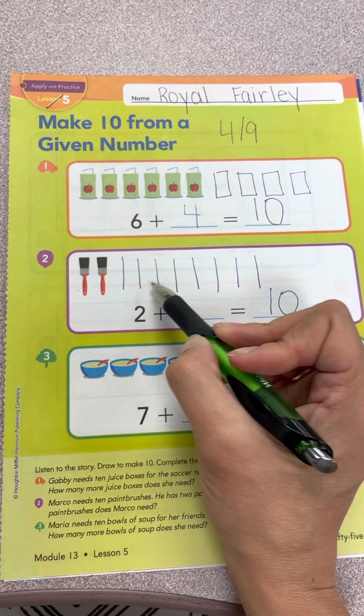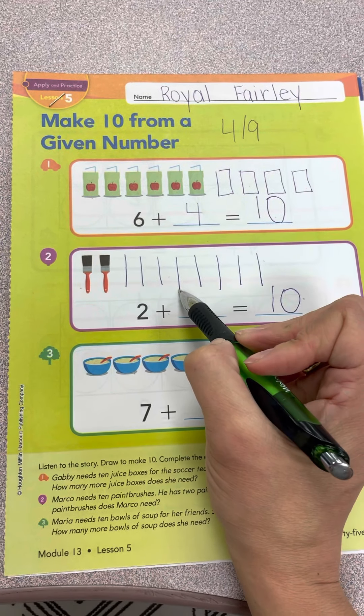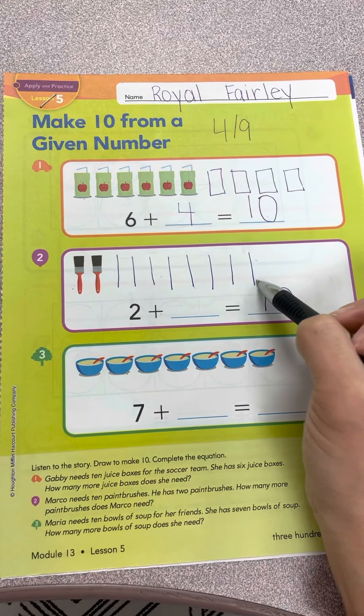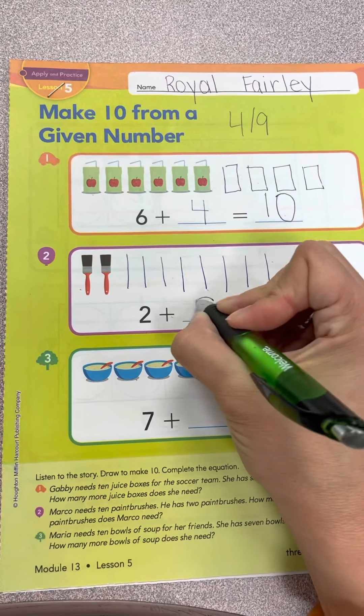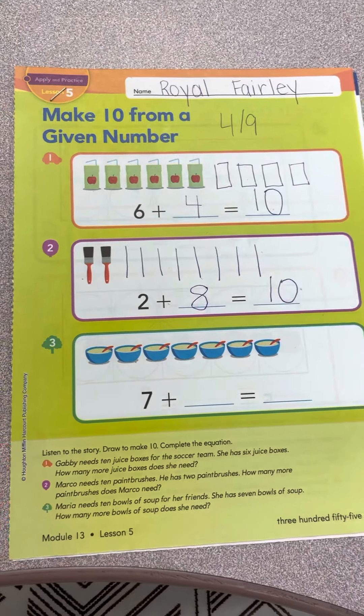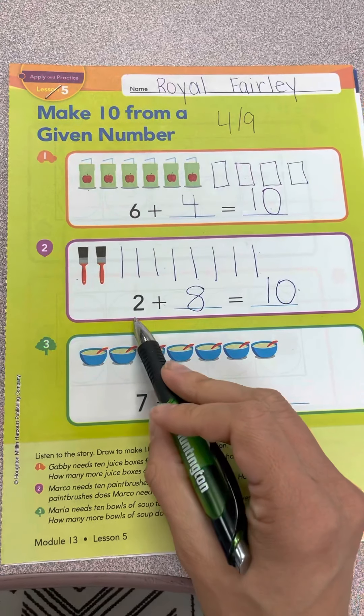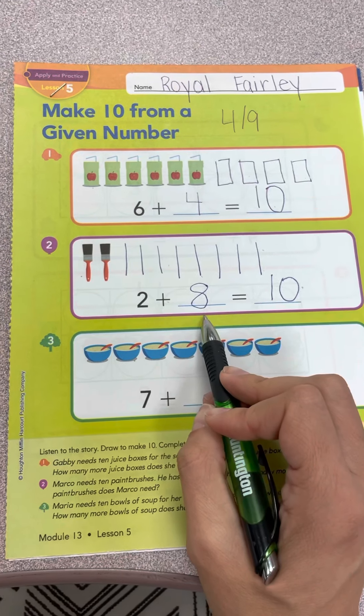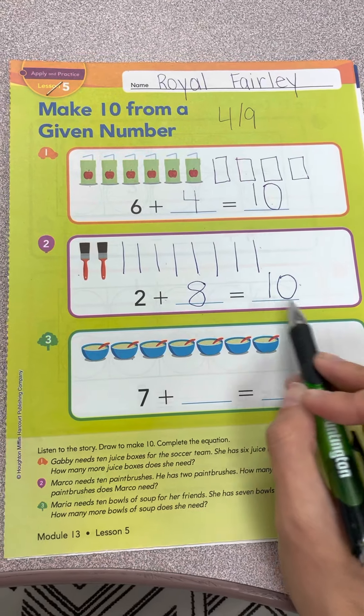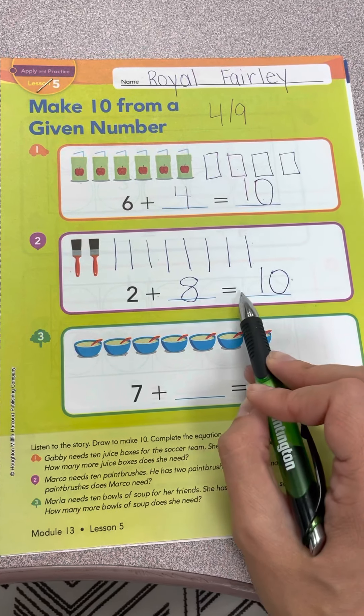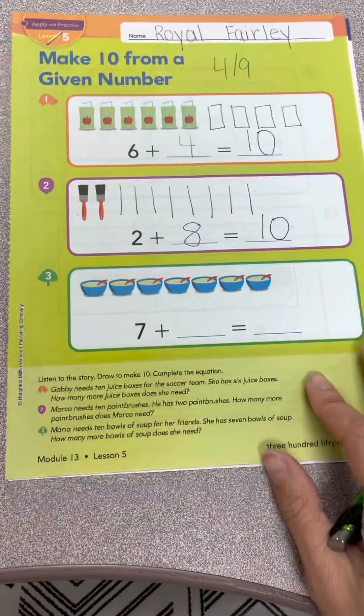Let's count how many more we needed to get to 10: 1, 2, 3, 4, 5, 6, 7, 8. Make an S, close the gate. That is how you make an 8. 2 plus 8 is equal to 10. 2 paintbrushes plus 8 more gives us 10.